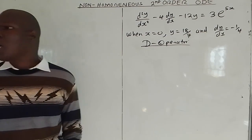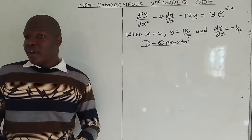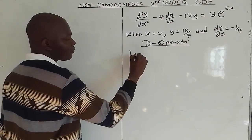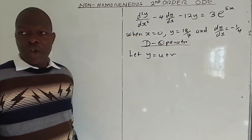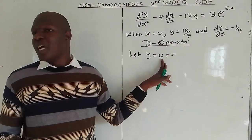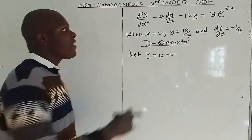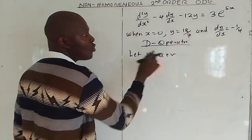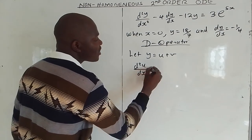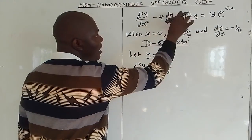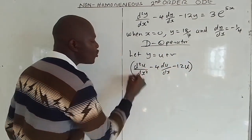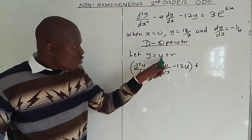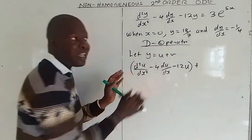So how do we use the D-operator method to solve a second order non-homogeneous ODE? The first thing we do is let y equal u plus v, where u is the complementary function and v is the particular integral. We substitute into the equation to get d²u/dx² minus 4 du/dx minus 12u, plus d²v/dx² minus 4 dv/dx minus 12v.